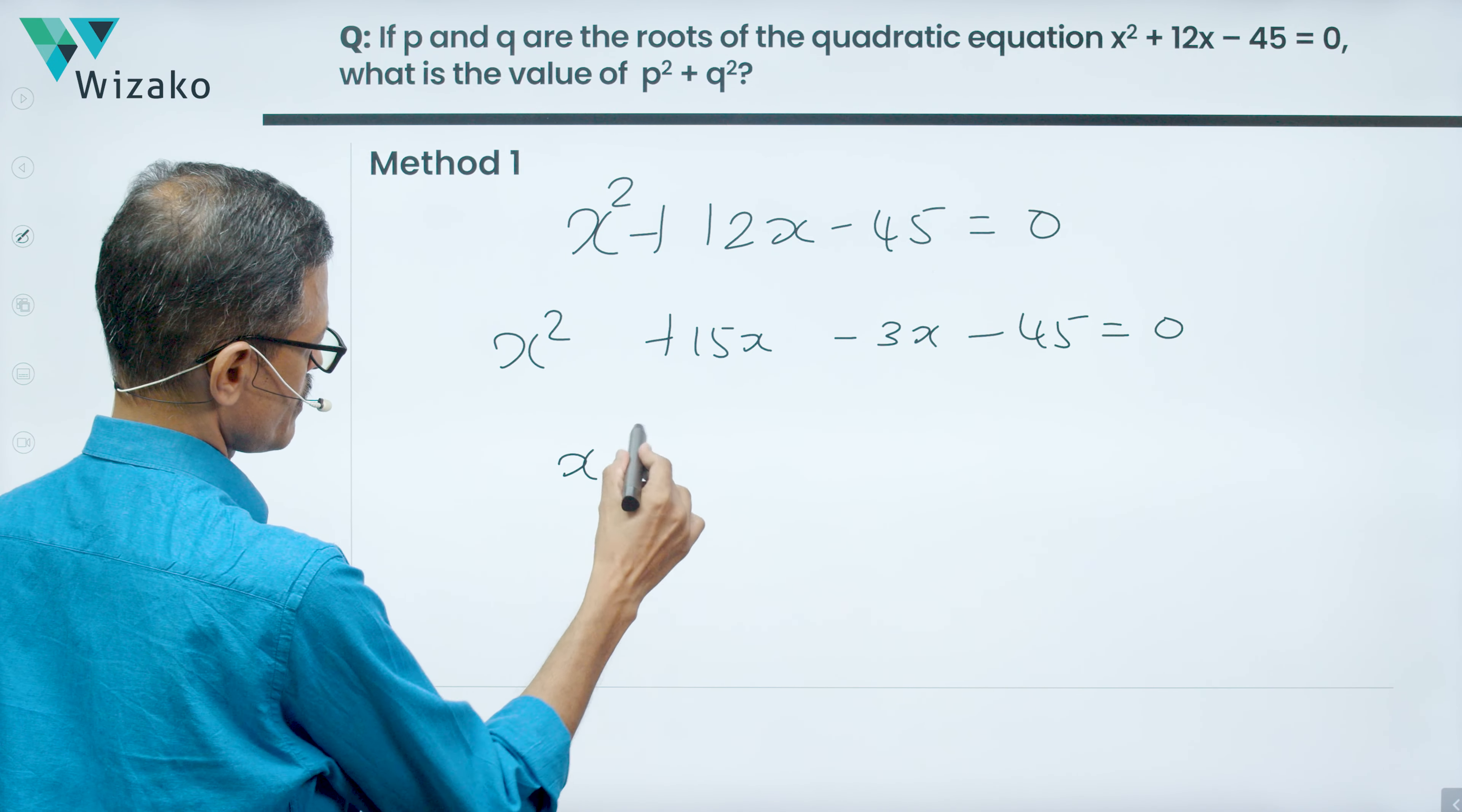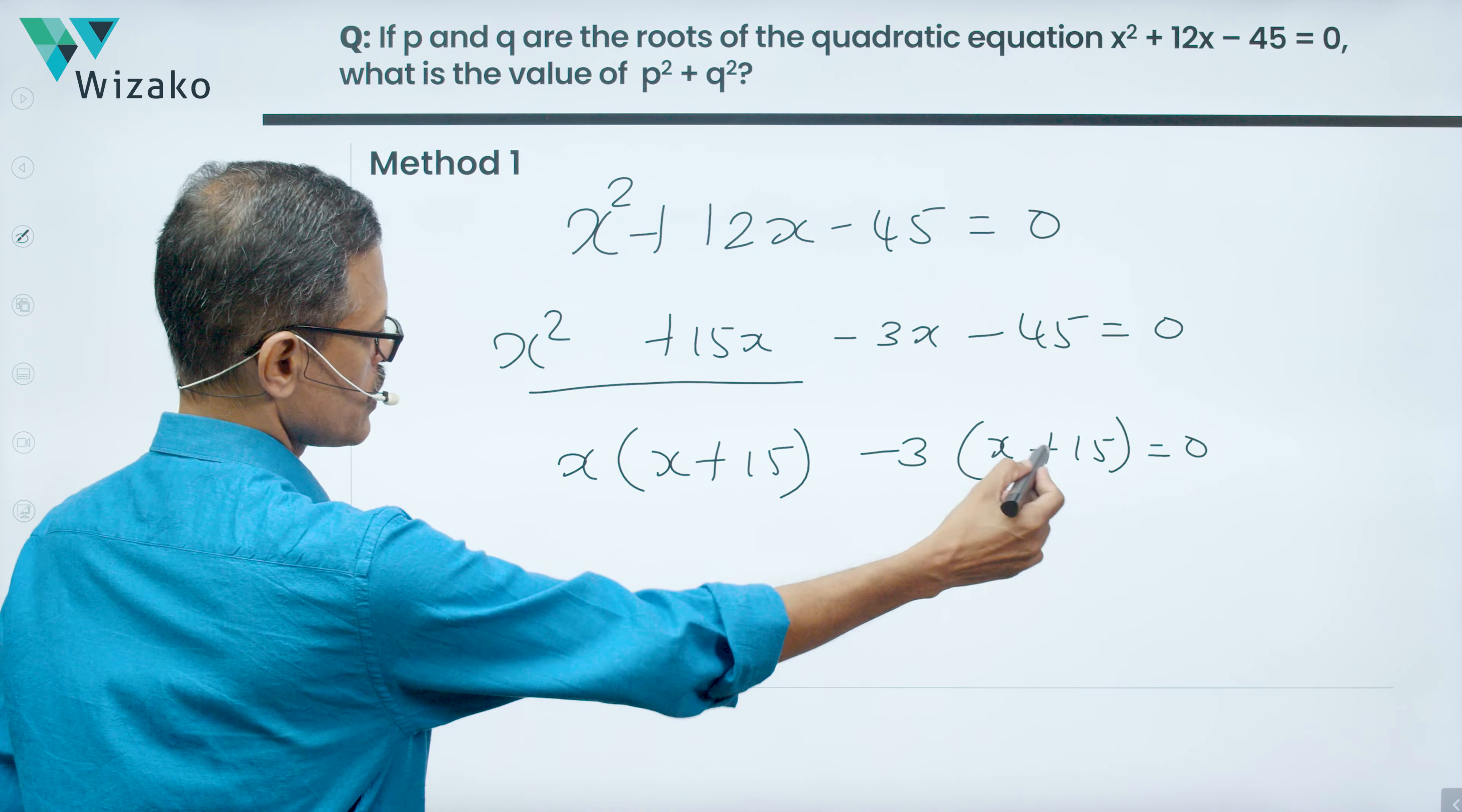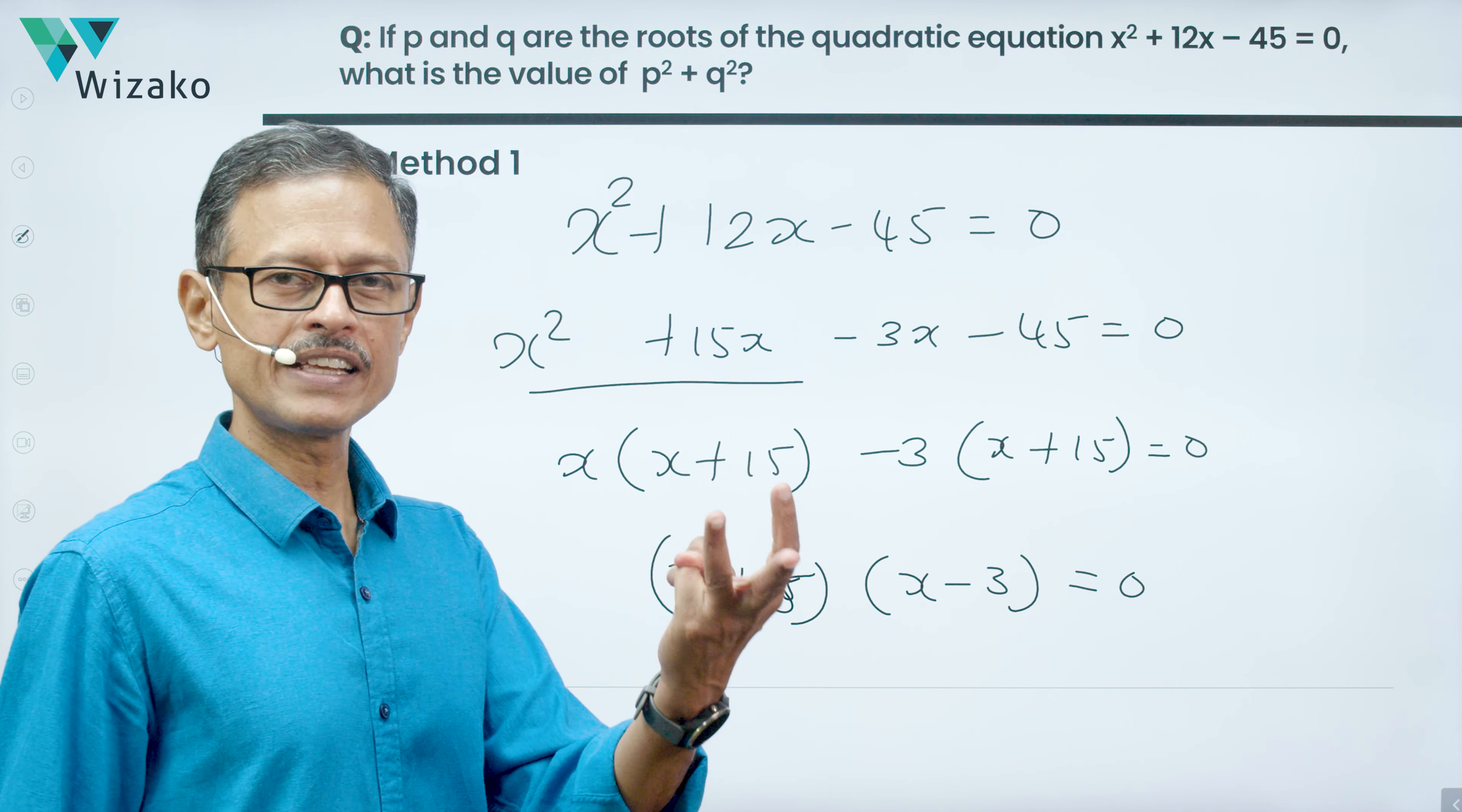This will factorize as x times (x + 15), taking x common between these two terms. Take -3 common between the third and fourth term, that leaves with another (x + 15). x + 15 is common to these two parts. So (x + 15) times (x - 3) = 0. So the values that we get for x are -15 or 3.